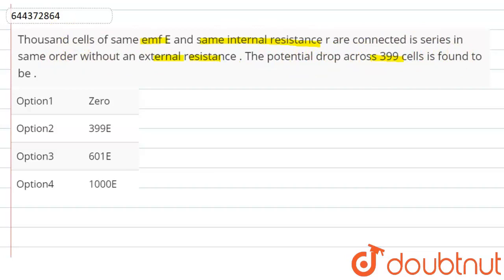See friend, as given in the question, thousand cells of same emf E and same internal resistance r. So here total emf is 1000E and total resistance is 1000r.